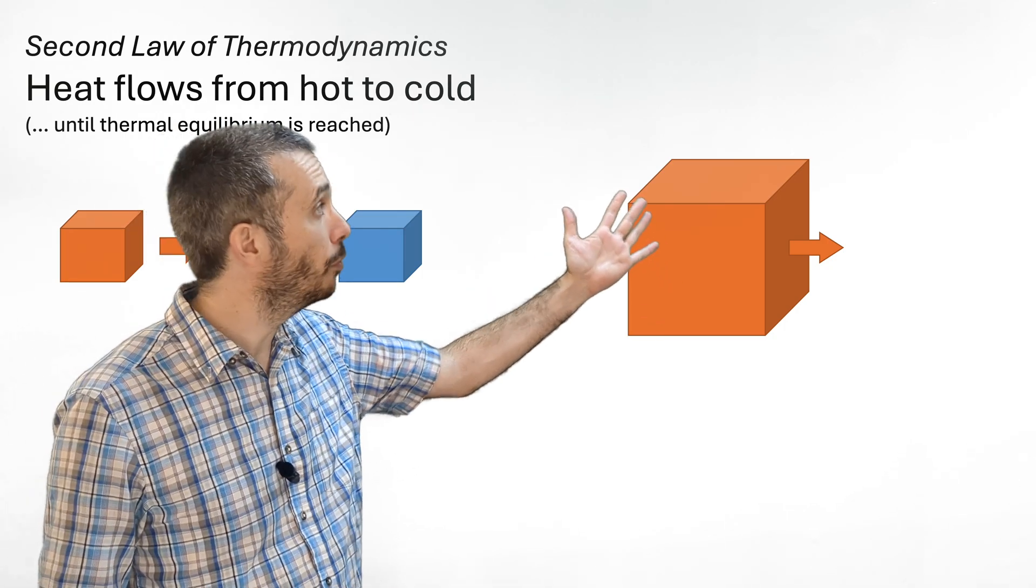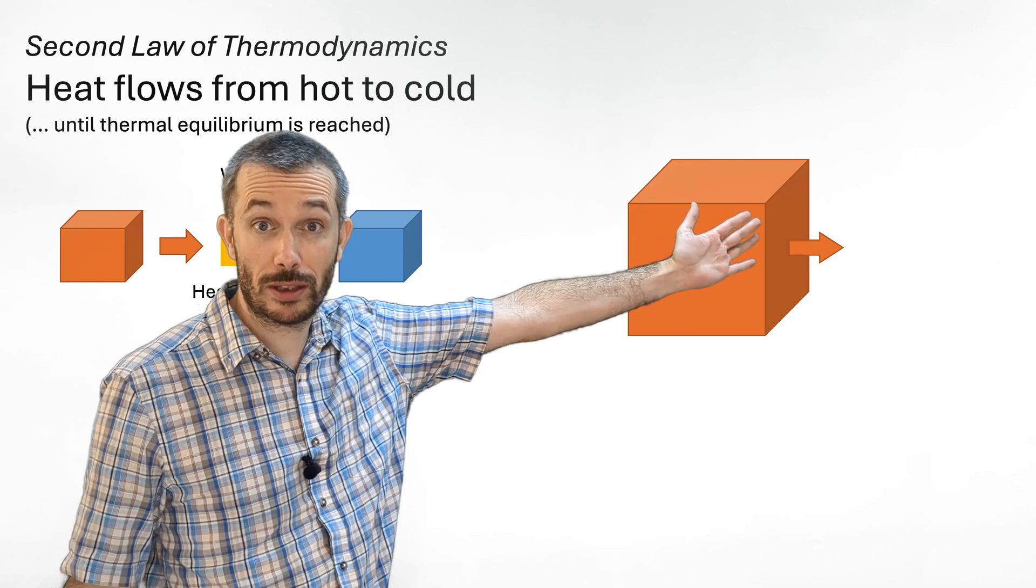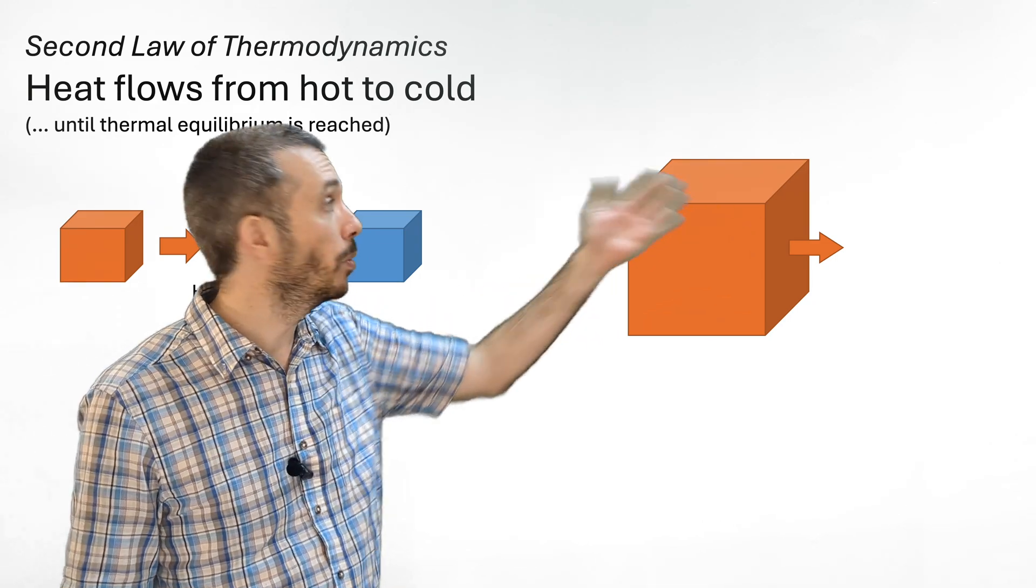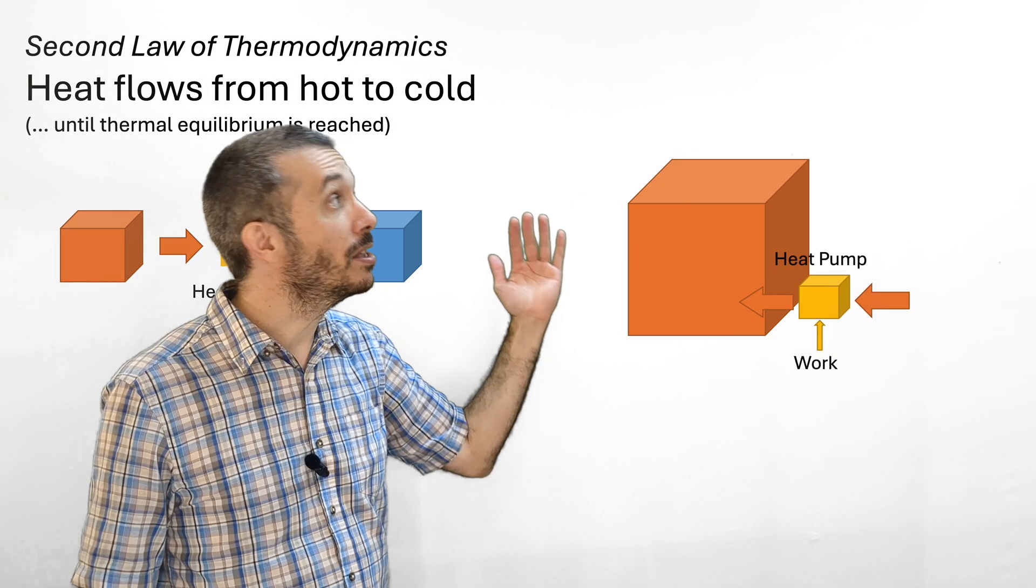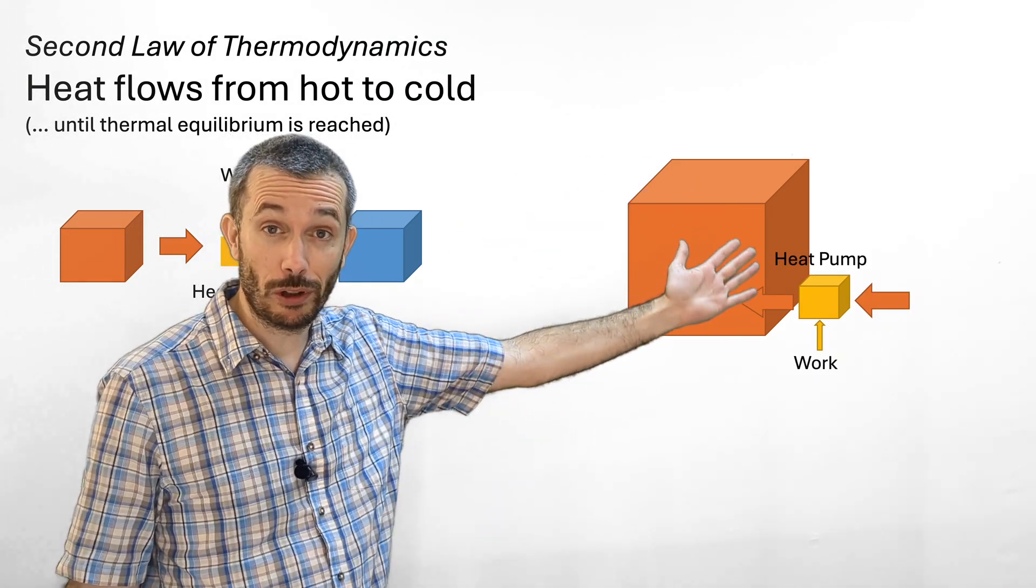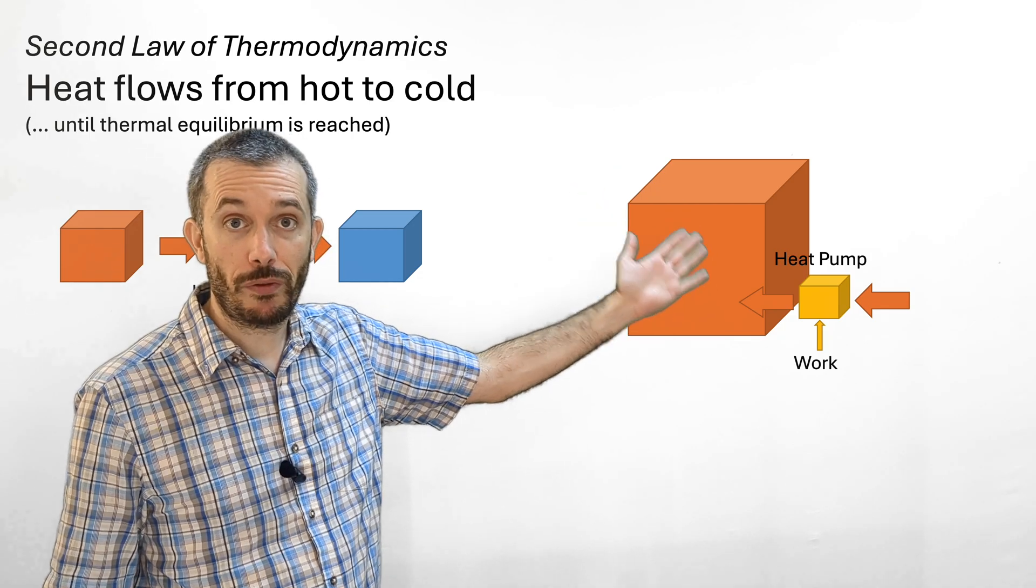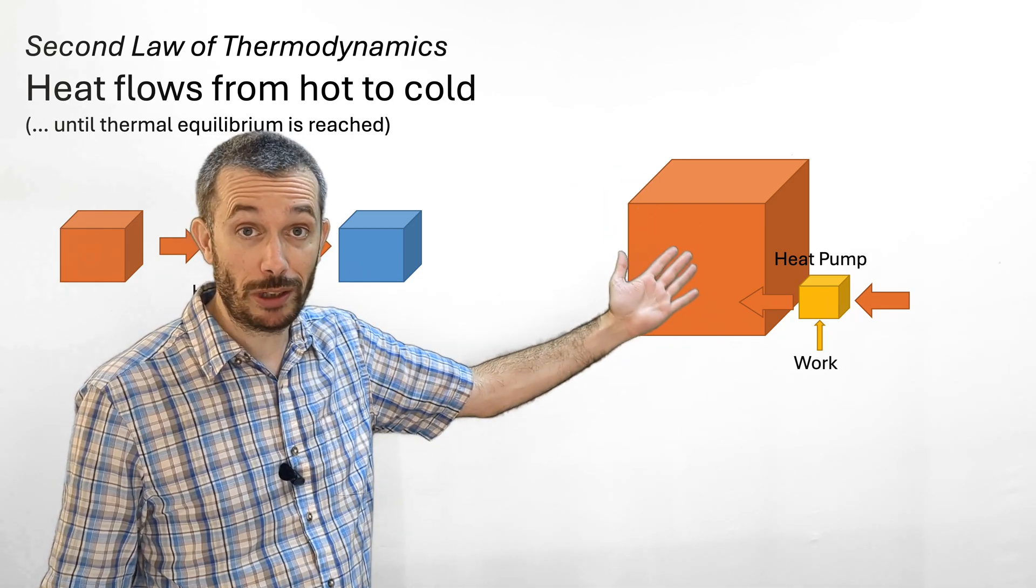The heat by itself would flow from hot to cold, so in the winter from your warmer building to the cold outside. That doesn't mean we cannot turn around that heat flow. It's only that this will not happen by itself. We will need to do something about it.